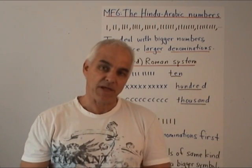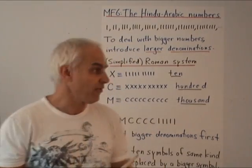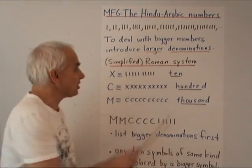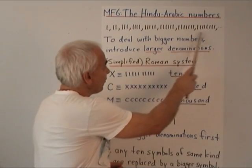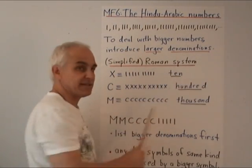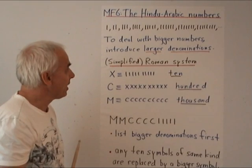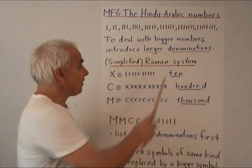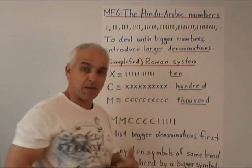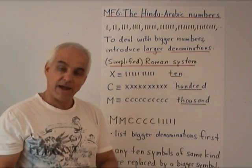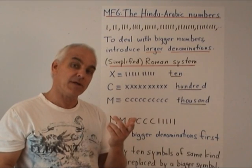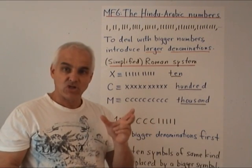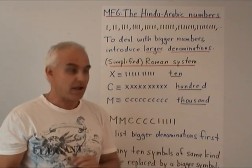Let me remind you that our approach so far to numbers has been as a string of ones. A natural number is just a string of ones — a sequence that carries on endlessly. It becomes pretty clear when working with numbers this way that larger and larger numbers become awkward to deal with, and every civilization has had to innovate and find ways of shortening these large numbers.